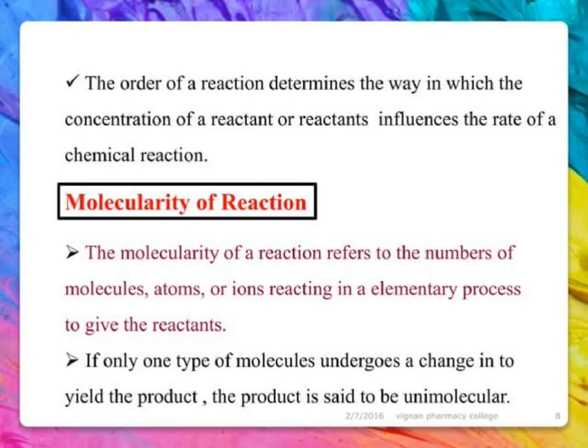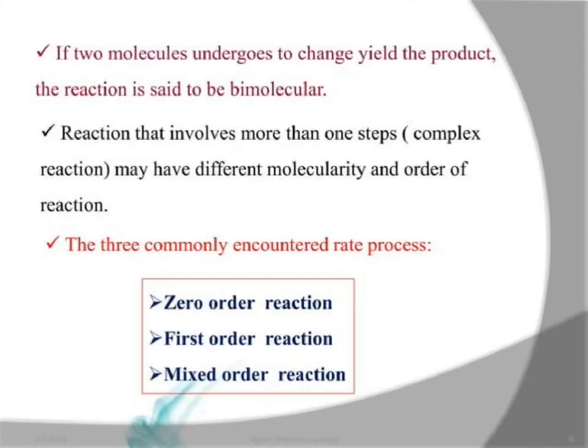Molecularity of reaction refers to the number of molecules, atoms, or ions reacting in an elementary process to give the products. If only one type of molecule undergoes a change to yield the product, the reaction is said to be unimolecular. If two molecules react to yield the product, the reaction is said to be bimolecular. Reactions that involve more than one step (complex reactions) may have different molecularity and order of reaction.